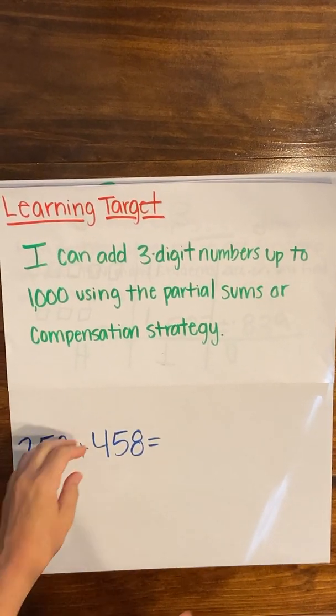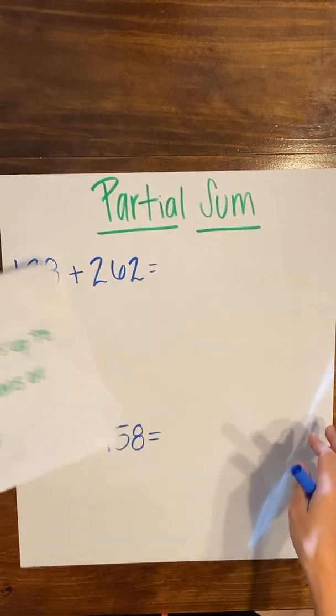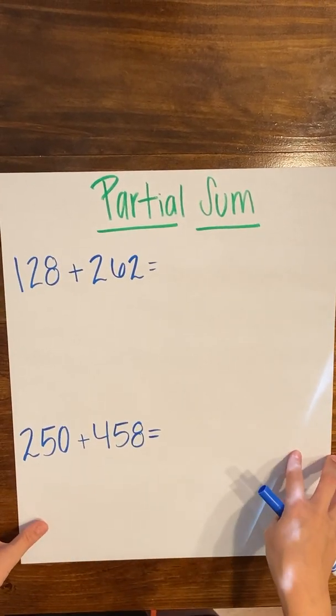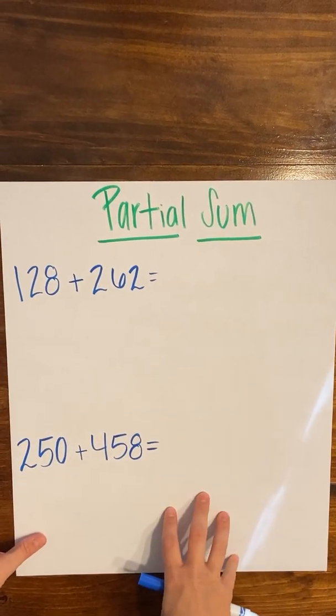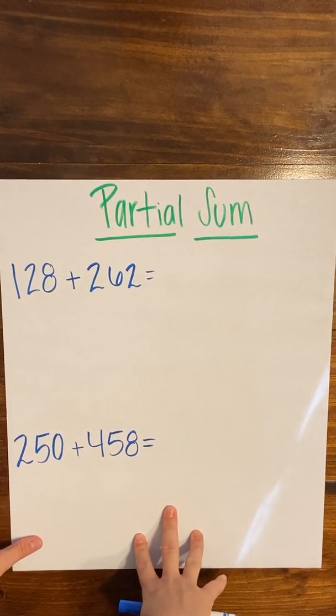So we're going to be looking at two strategies today for addition with three-digit numbers and the first one we're going to look at is partial sum. Remember that when we're learning these different strategies, you're going to pick the one that kind of matches the problem that you're doing.